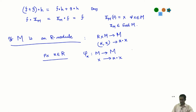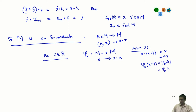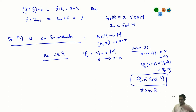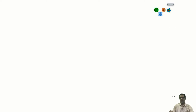Let us check the properties of φ_α using the module axioms. Axiom 1 says α·(x+y) = α·x + α·y, which means φ_α(x+y) = φ_α(x) + φ_α(y). In other words, φ_α is a group homomorphism, so φ_α belongs to End(M) for all α in R. Axiom 1 is thus encoded by saying each φ_α is a group homomorphism.